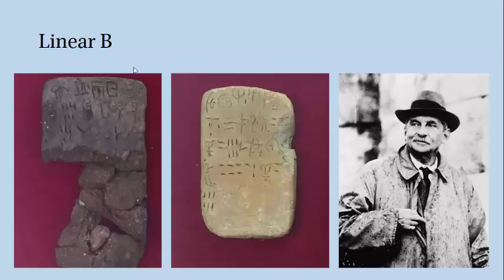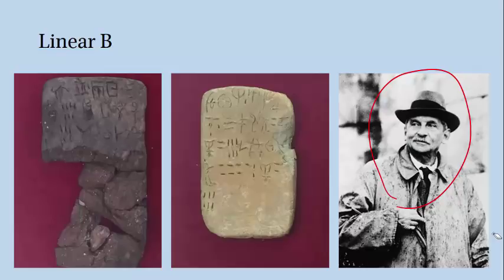We call it Linear because its discoverer, Sir Arthur Evans, a British archaeologist, noticed that it was composed sort of abstractly of individual lines, which was different from some of the pictographic scripts he'd seen before in the region. We call it Linear B to differentiate it from an older script called Linear A, from which Linear B is probably descended. Now Linear A has never been deciphered, and we don't know what language it represents, which is one of the problems with deciphering it.